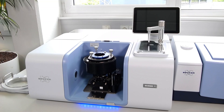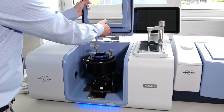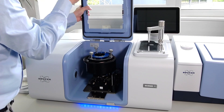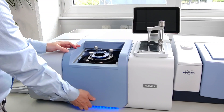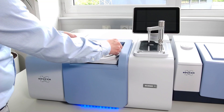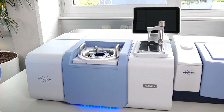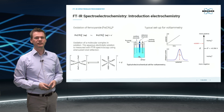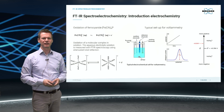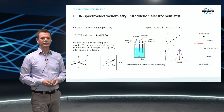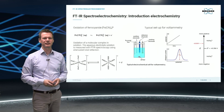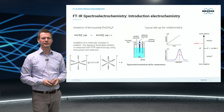Finally, the sample compartment cover of the reflection unit can be installed. This allows access to the electrochemical cell from the top during the reaction. The reaction presented today is the oxidation of ferrocyanide, a molecular complex. After oxidation, the iron center of the complex changes its oxidation state, resulting in differences in the bonding strength of the cyanide ligands.